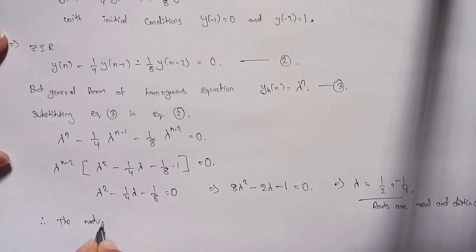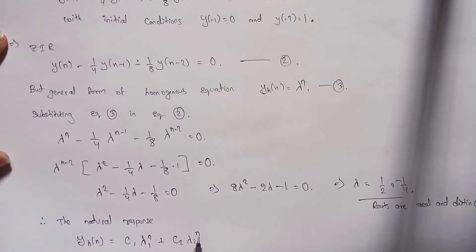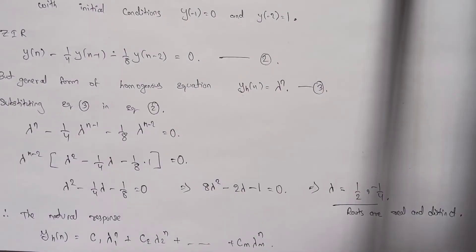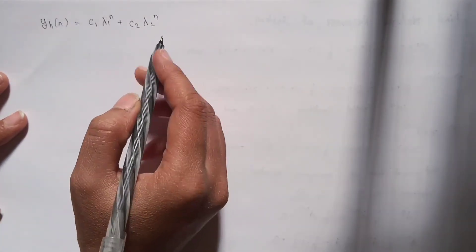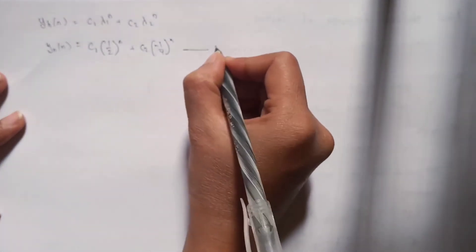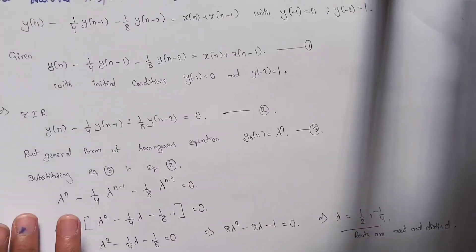The natural response for real distinct roots takes the form y_h(n) = C1·lambda1^n + C2·lambda2^n + … + Cm·lambdam^n. Since we have exactly two roots, lambda1 = 1/2 and lambda2 = −1/4, we write y_h(n) = C1·(1/2)^n + C2·(−1/4)^n. Let's call this equation 4.